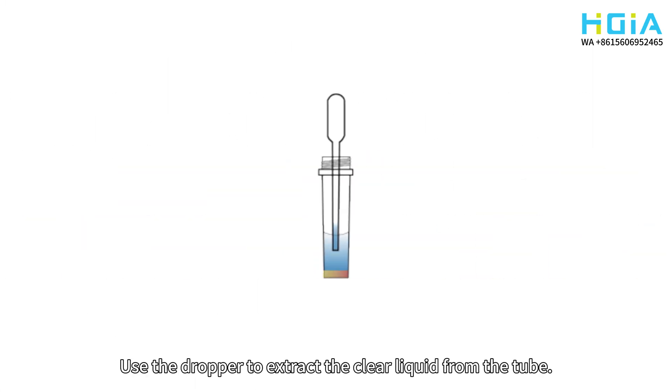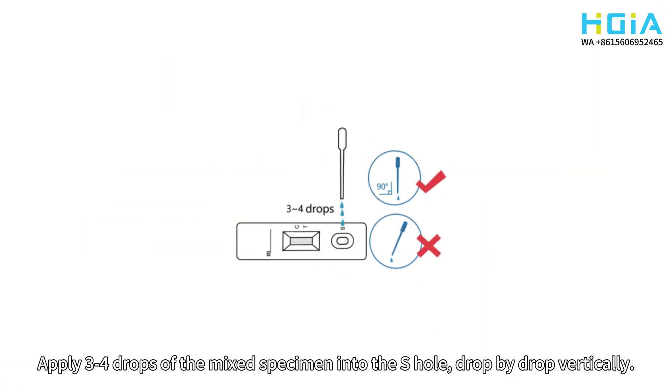Use the dropper to extract the clear liquid from the tube. Apply three to four drops of the mixed specimen into the S hole, drop by drop vertically.